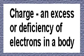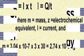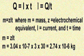Let's now turn our discussion to current. The flow of charge is called electric current. The magnitude of the current I is the amount of charge Q passing through a conductor per unit time. Thus, coulombs equals amperes times seconds, and current is measured in amperes.